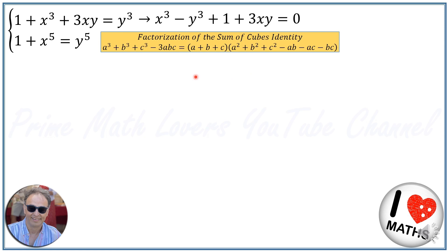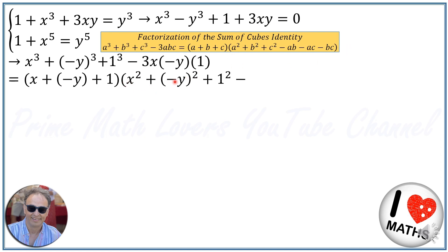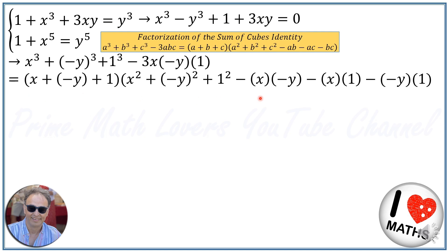Applying this identity, I rewrite the equation as x cubed plus (minus y) cubed plus 1 cubed minus 3 times x times (minus y) times 1. In our equation, a is x, b is minus y, and c is 1. So this equals (a plus b plus c), which is x plus (minus y) plus 1, times x squared plus (minus y) squared plus 1 squared minus x times (minus y) minus x times 1.